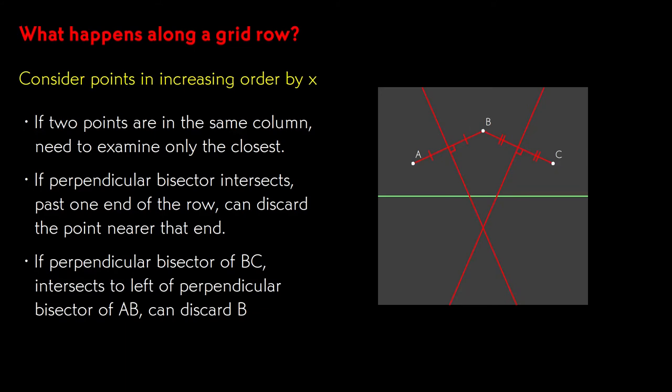Finally, we look at the bisectors among three points. If we have a pair of points A and B, whose bisector falls somewhere on the row, and a third point C, B's region of influence will no longer intersect the row if the bisector of C intersects to the left of A's bisector. This rule holds even if the point C is on the opposite side of the row. We don't need any special case computations for points above and below the row.